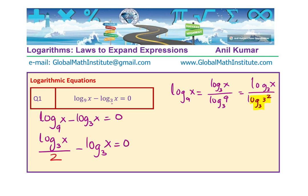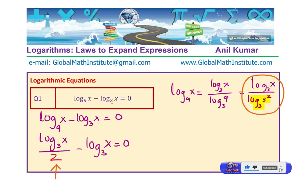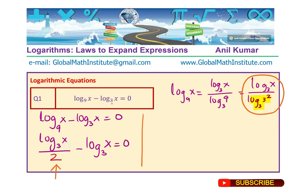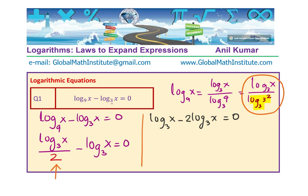We changed the base by substituting log base 3 of 3 squared equals 2. Now, multiplying each term by 2, we get log base 3 of x minus 2 times log base 3 of x equals 0. Combining these terms gives us minus log base 3 of x equals 0, which means log base 3 of x equals 0.